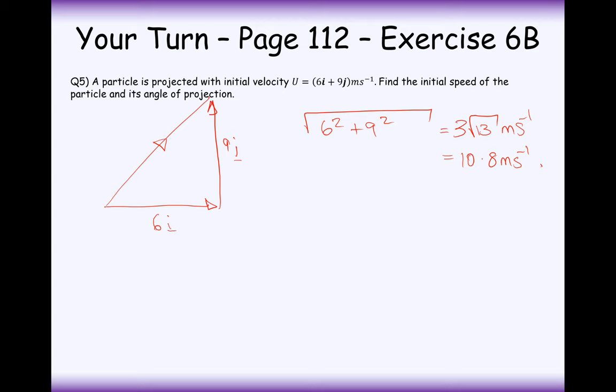So that's the initial speed of the system, and then the angle of projection is going to be a tan calculation, tan minus 1 of 9 over 6. Remember that's always going to be opposite over adjacent. 9 divided by 6, and that projection is going to be at a 56 degree angle. Lovely, there we are. So that's the answer to that question. Move on quickly to exercise 6c I think. Thanks very much for watching.